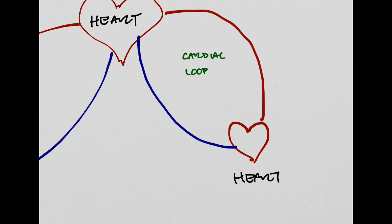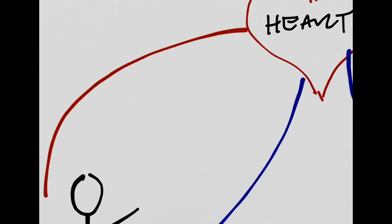The loop that feeds the heart is called the cardiac loop. I'll zoom back out so you can see where we are. And finally, the one that feeds the brain and the rest of your body is called the systemic loop.